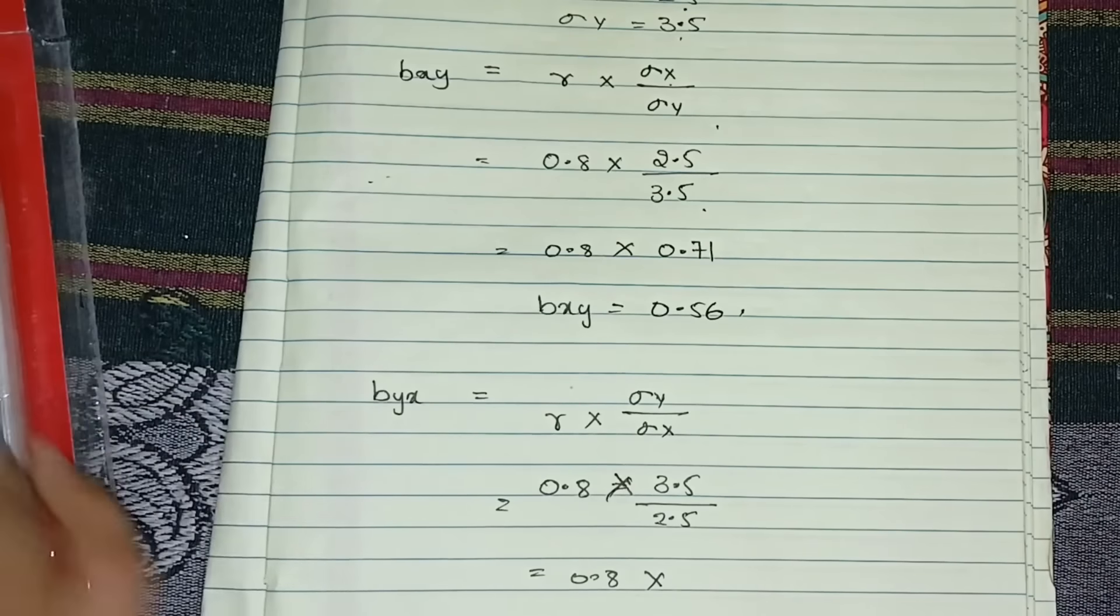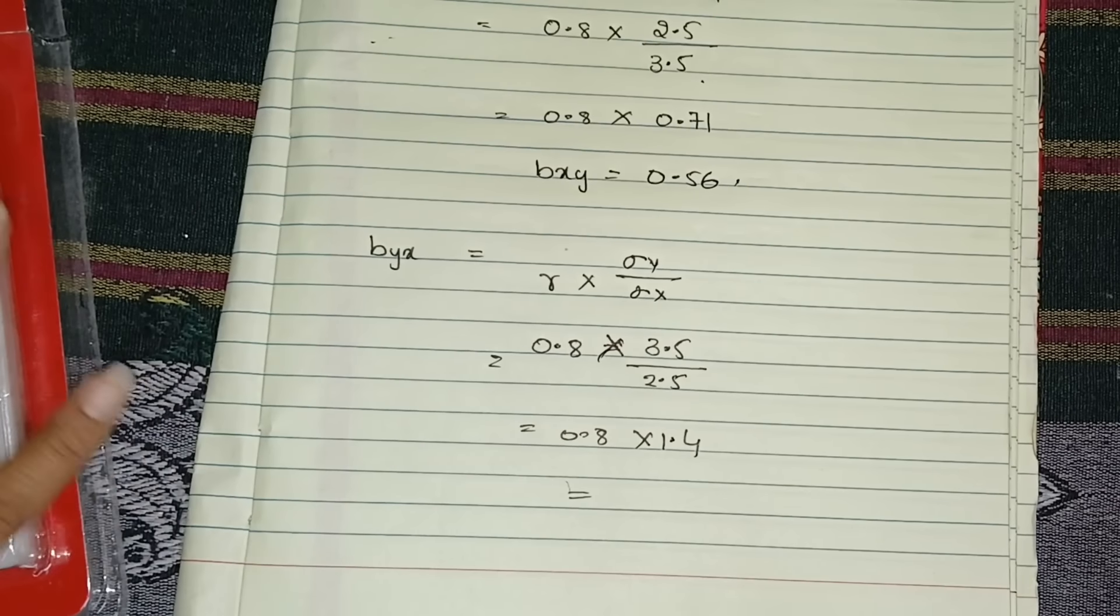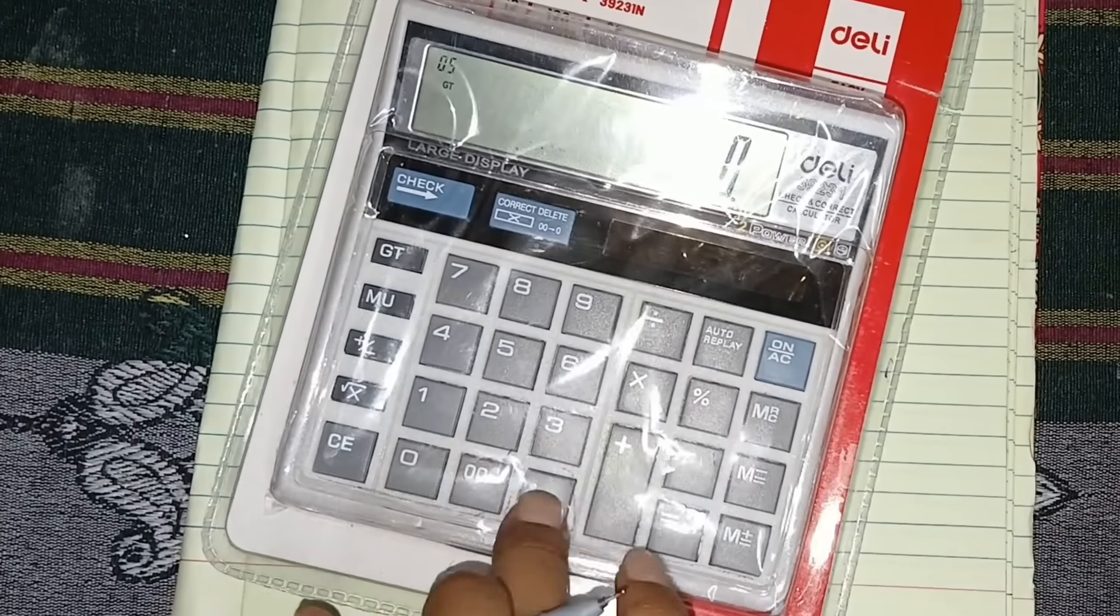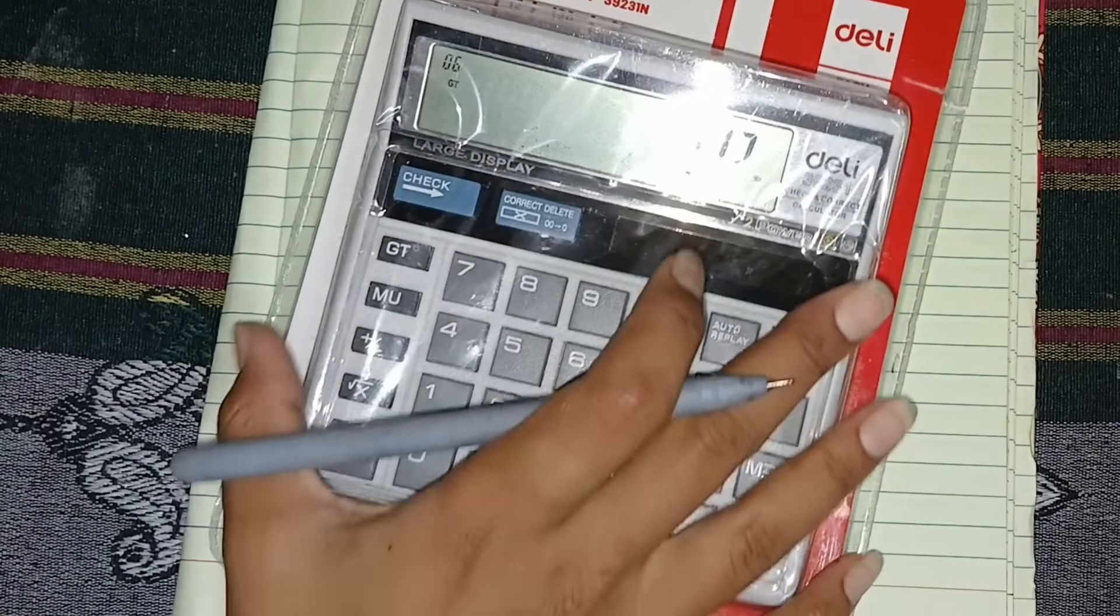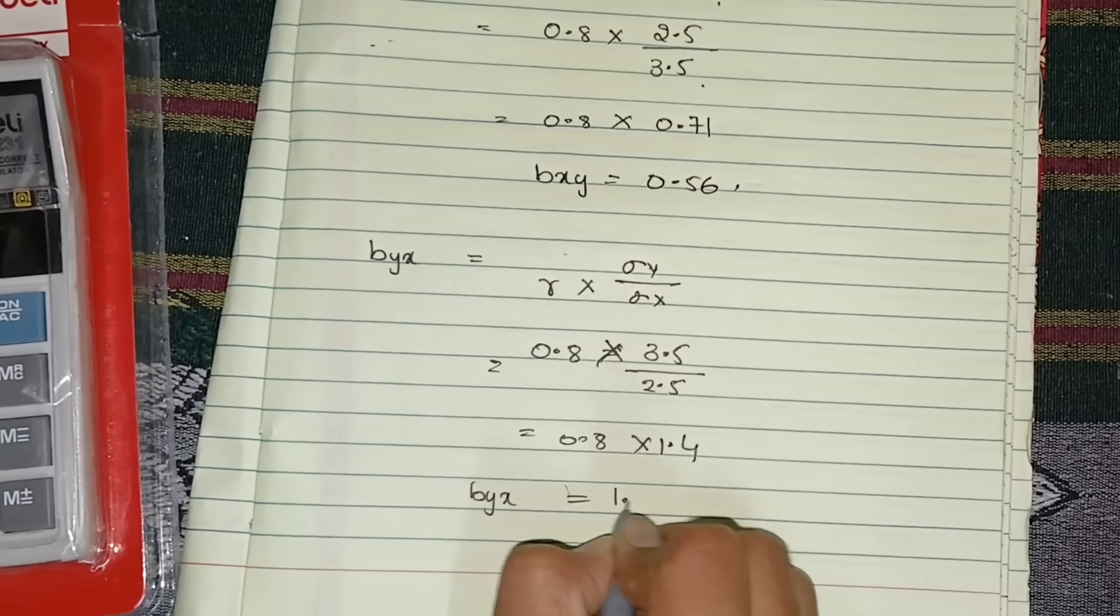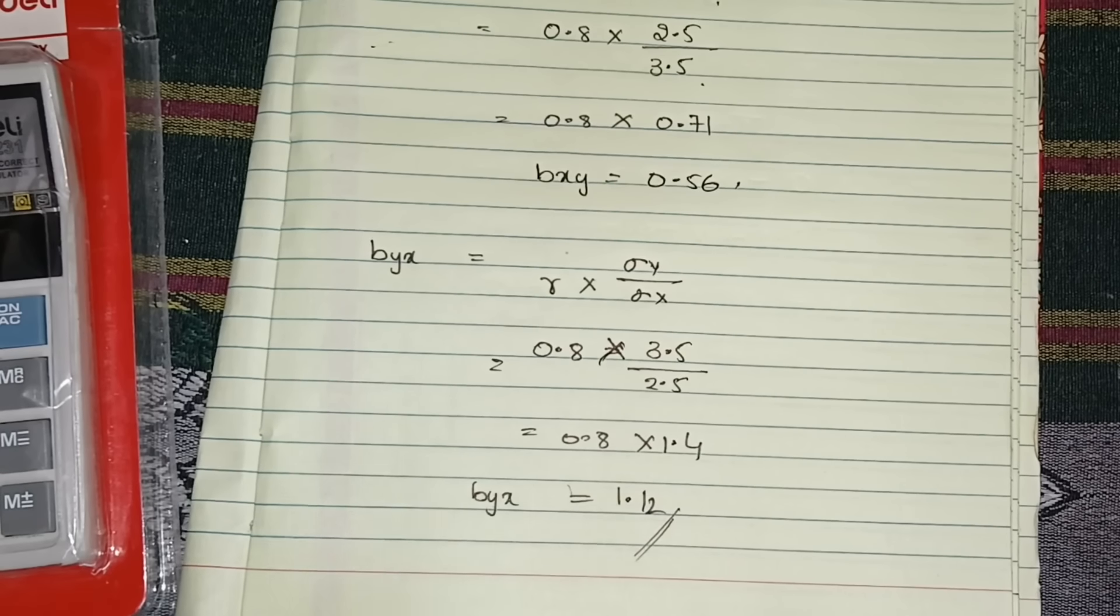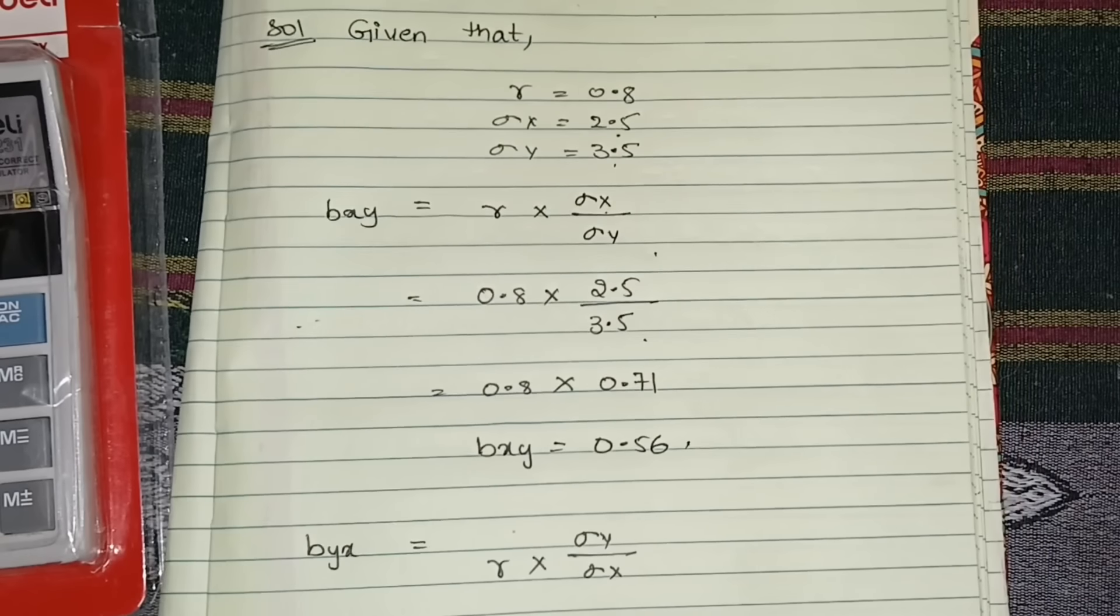What we need to do: 0.8 into 3.5 divided by 2.5. You will get 1.4. So 0.8 into 1.4 equals 1.12. So byx is equal to 1.12. This is the pakka 4 marks question, just practice it.